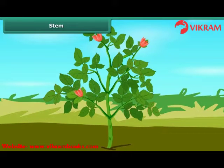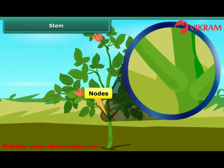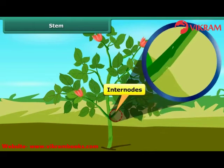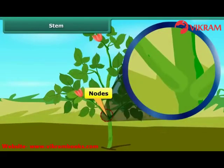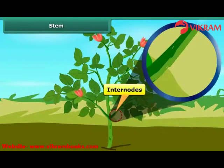The stem is divided into nodes and internodes. Nodes are the swollen portions of the stem that hold buds, which grow into leaves, flowers, etc. Internodes, on the other hand, are the stretches between two nodes.